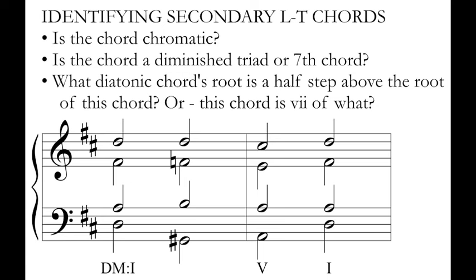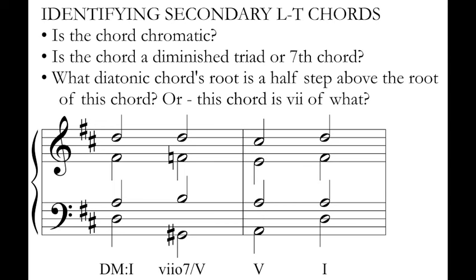Let's look at a simple progression here that has one, five, and one in the key of D major, but in the middle we see a chromatic chord. I know it's chromatic because it has two pitches that are not in my key signature for D major — it has a G-sharp and an F natural. The first question I've already answered: is the chord chromatic? Yes, it's got a G-sharp and an F natural in it. Is the chord a diminished triad or seventh chord? G-sharp, B, D, F natural is how we would stack this in thirds. G-sharp, B, D is a diminished triad, and F natural is a diminished seventh above G-sharp. So yes, this is a fully diminished seventh chord. This is likely a secondary leading tone chord. The last question: G-sharp is seven of what? What diatonic chord's root is a half step above G-sharp? G-sharp is the leading tone of A, so that means we're tonicizing A, which is five in this key.